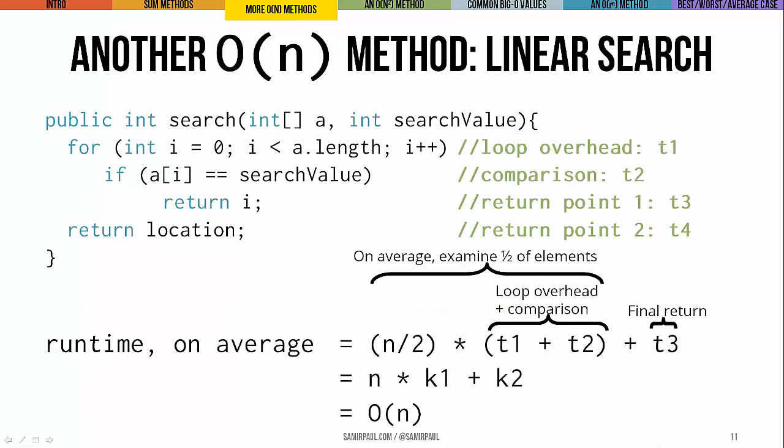A couple of other array processing methods we've looked at are also O of N. Here is the linear search method. We assign times for the overhead of the loop (T1), the comparison inside the loop (T2), a potential return statement at point one (T3), and a return statement at point two (T4). Analyzing this runtime is a little more complex than the sum method. Each time through the loop we make a comparison, and when we find a match the method returns the index. If we assume the search is usually for values that are present, on average about half the elements get looked at before we find a match.